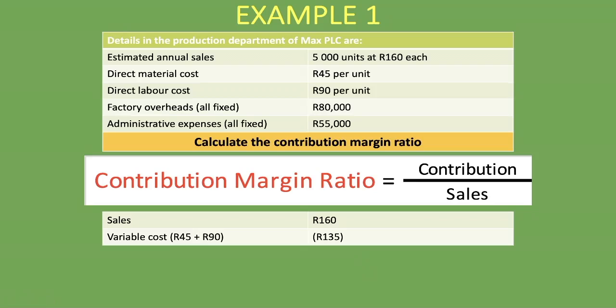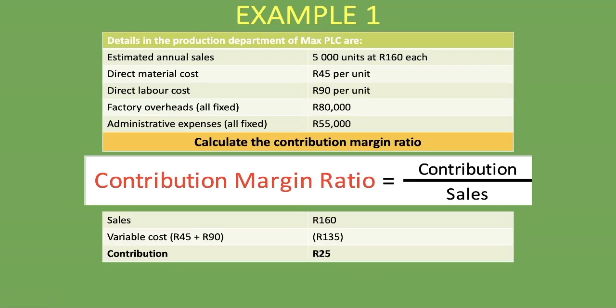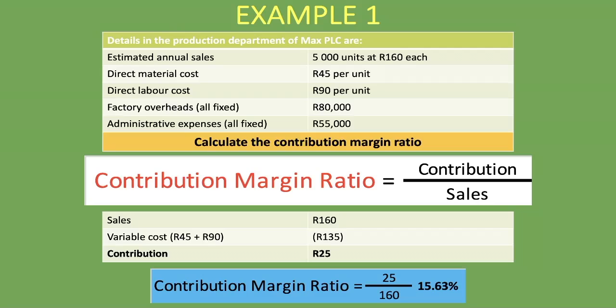We take our sales of R160 minus the variable cost of R135, which gives us a contribution of R25. Now we can calculate the contribution margin ratio: R25 divided by R160, which gives us a contribution margin ratio of 15.63%.